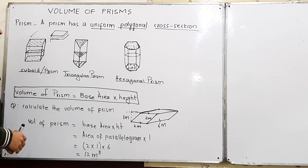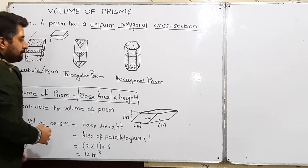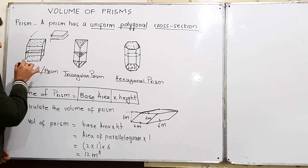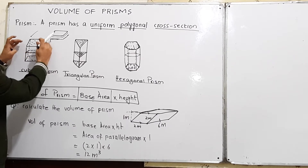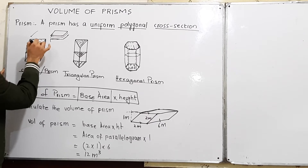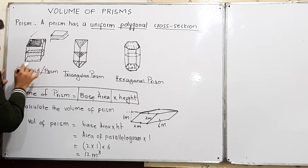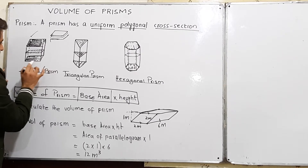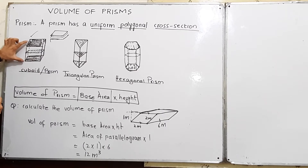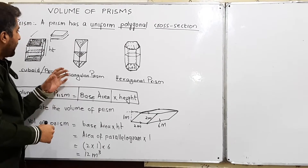This is the concept of a prism. The volume of a prism is basically base area multiplied by the height of the prism. Now what is the base area of a prism? Suppose this is a cuboid — because my cross-sectional area is uniform throughout its height, this is a prism. This top surface we take as the base of the prism, and the distance between the two bases is the height of the prism.